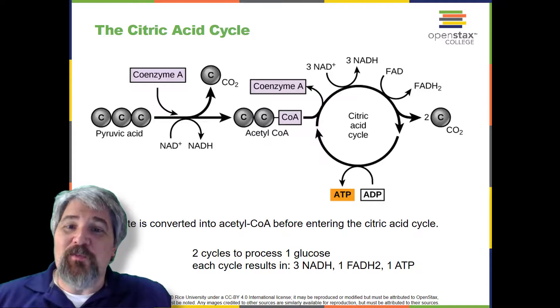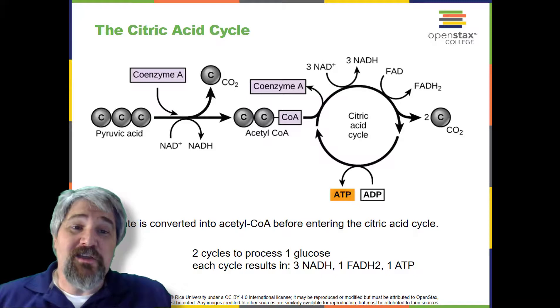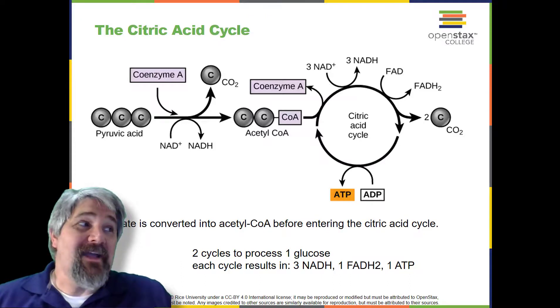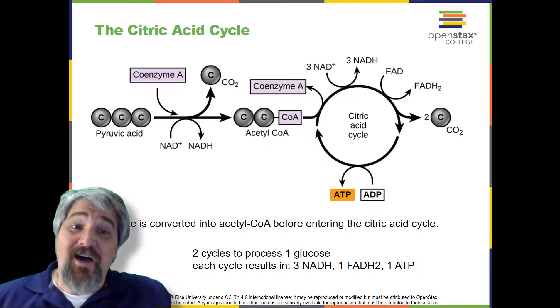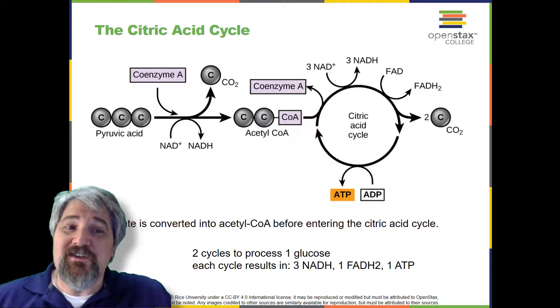In mitochondria, pyruvate will be transformed into a two-carbon acetyl group by removing a molecule of carbon dioxide that will be picked up by a carrier compound called coenzyme A, abbreviated as CoA, which is made from vitamin B5. The resulting compound is called acetyl-CoA. Acetyl-CoA can be used in a variety of ways by the cell, but its major function is to deliver the acetyl group derived from pyruvate to the next pathway in glucose catabolism.